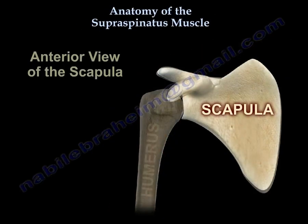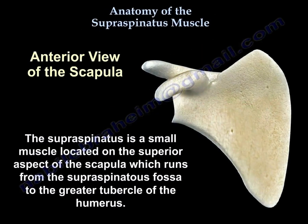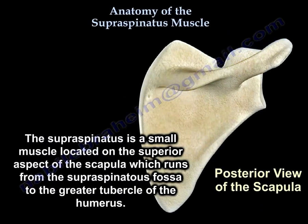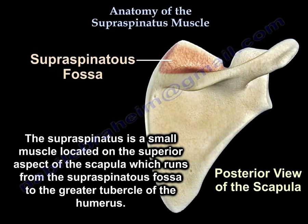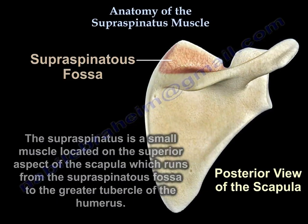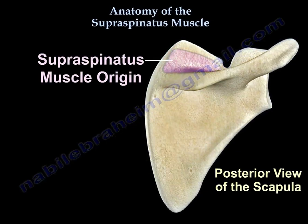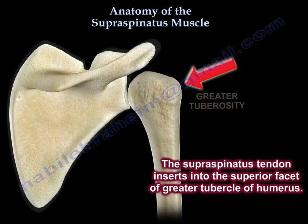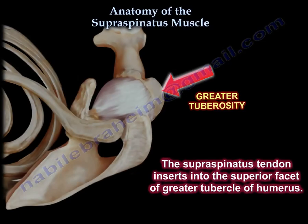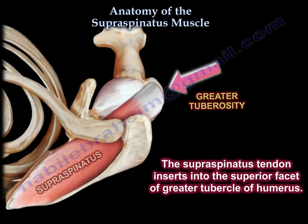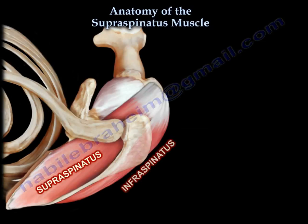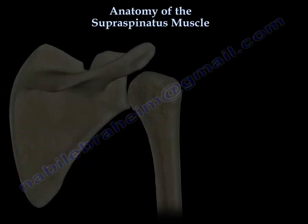Supraspinatus muscle. It arises from the supraspinatus fossa of the scapula, with insertion into the superior facet on the greater tuberosity of the humerus. It is also one of the four rotator cuff muscles.